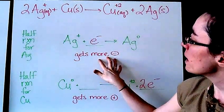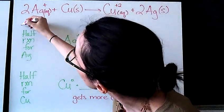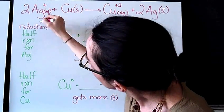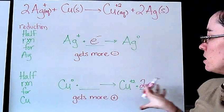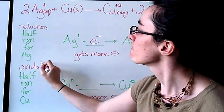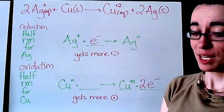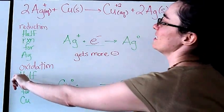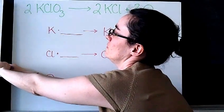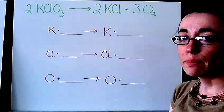Now, since this one is getting more negative, we actually call this the reduction half reaction. And since this element here is getting more positive, we call this the oxidation half reaction. Now we're ready to look at something that's a little bit more complex.